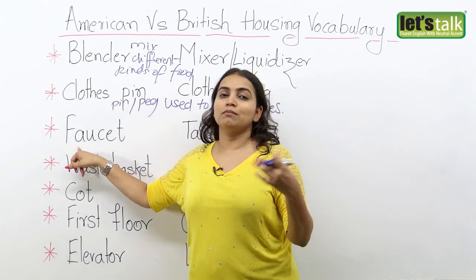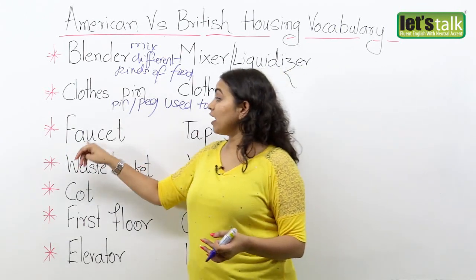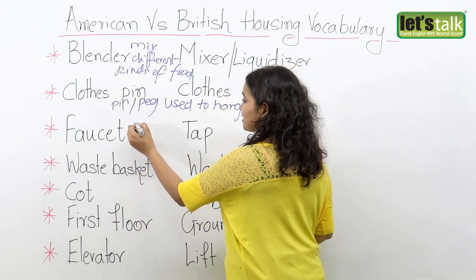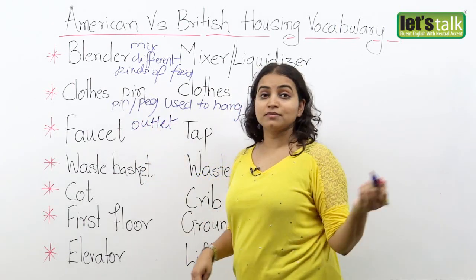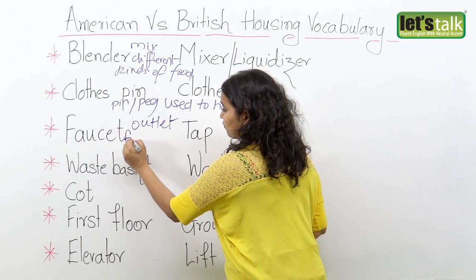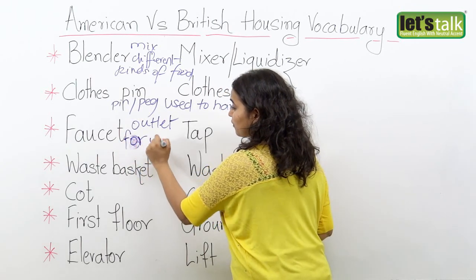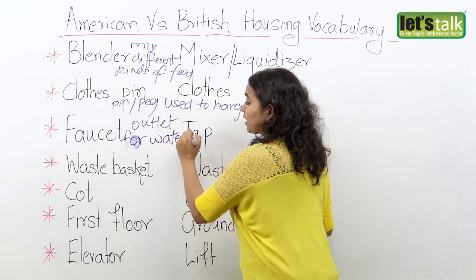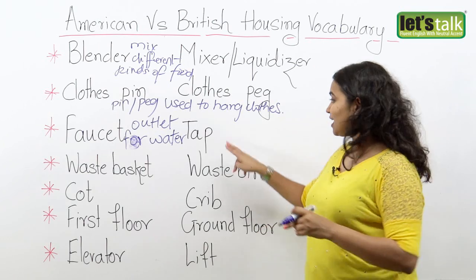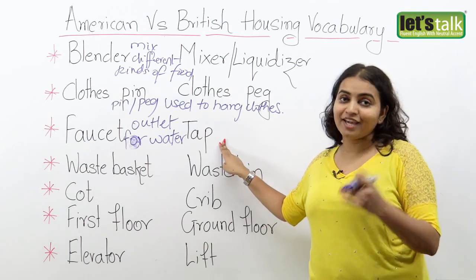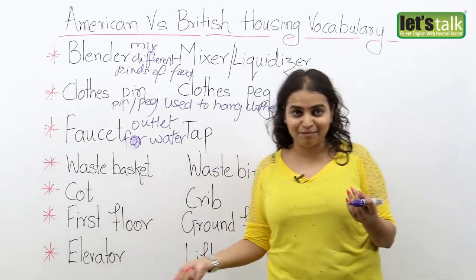When you go to a bathroom or somewhere near the kitchen sink, you will have a faucet. It's basically an outlet from where the water comes out. You can say 'turn off the faucet so that you don't waste water.' But in the UK you call that a tap — so you say 'turn off the tap' or 'turn on the tap.'